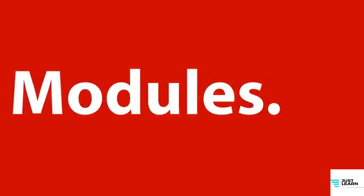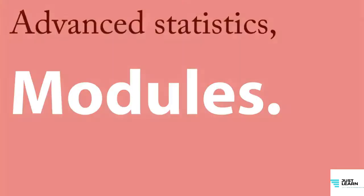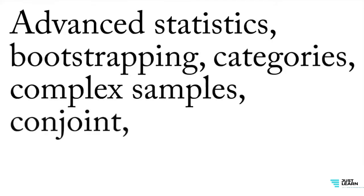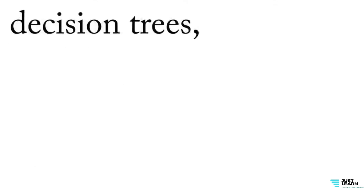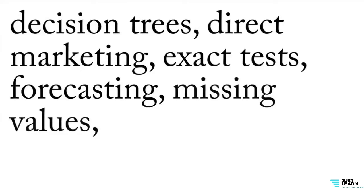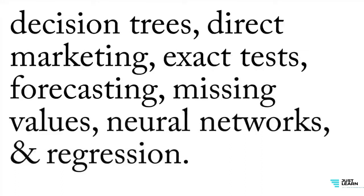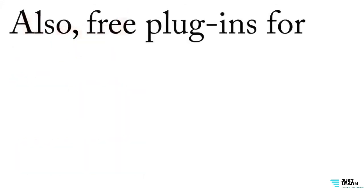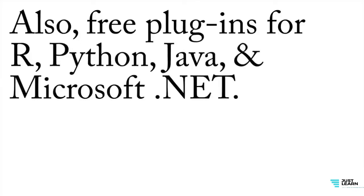We also need to talk about modules — the components that add extra functionality to SPSS and differentiate the different editions. The available modules include advanced statistics, bootstrapping, categories, complex samples, conjoint, custom tables, data preparation, decision trees, direct marketing, exact tests, forecasting, missing values, neural networks, and regression — 14 additional modules. Compared to the 9,000 packages available for R, that's a difference, and these modules cost money. On the other hand, there are also free plugins that make it possible to use code in R, Python, Java, and the Microsoft .NET framework within SPSS.